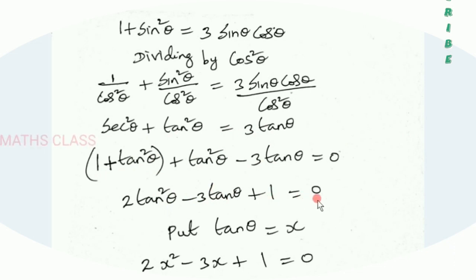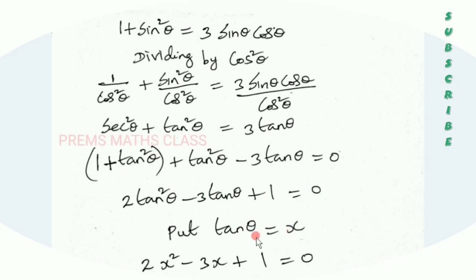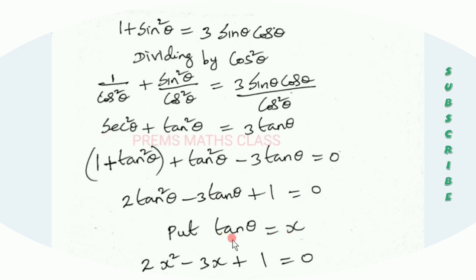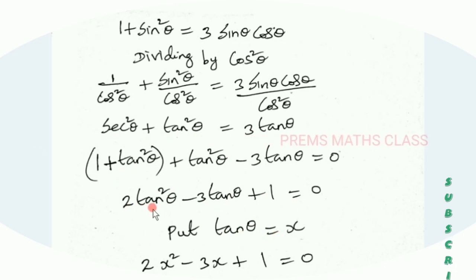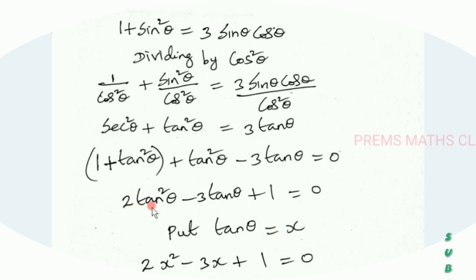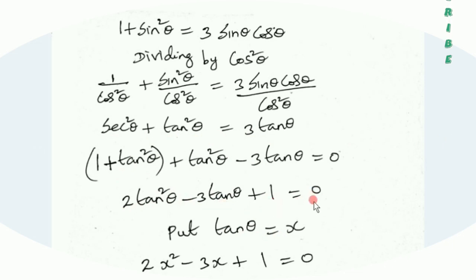Now putting tan theta equal to x, we get 2x squared minus 3x plus 1 equal to 0.